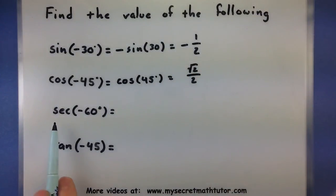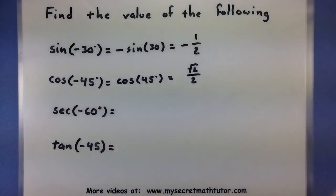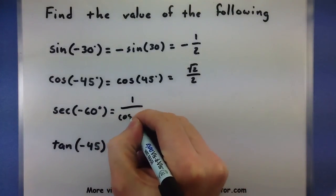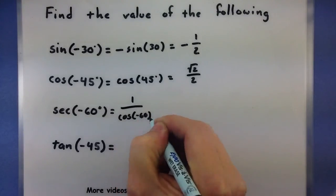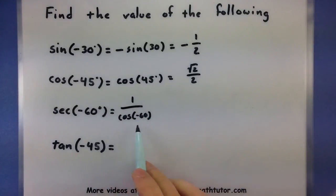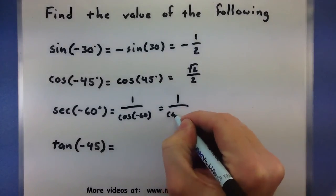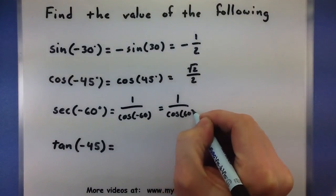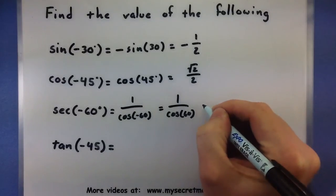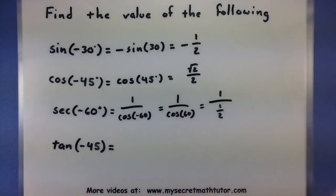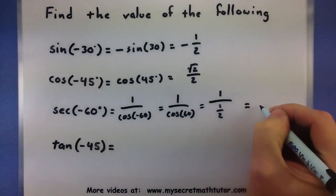Next, secant. In case you've forgotten what secant is and you're not sure whether you should move the sign out or just drop it, rewrite this using cosine. Now we can use the identity and just get rid of that negative sign. Cosine of 60 degrees is 1/2, so I have 1 divided by 1/2, which is just 2.